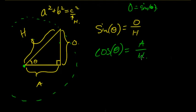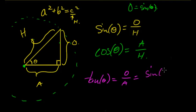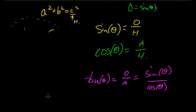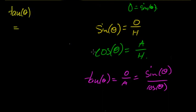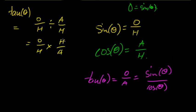Cos theta = adjacent over hypotenuse. Tan theta = opposite over adjacent, and can also be expressed as sine theta over cos theta. We can prove this: substituting, sine theta / cos theta = (opposite/hypotenuse) ÷ (adjacent/hypotenuse) = (opposite/hypotenuse) × (hypotenuse/adjacent). The hypotenuses cancel, leaving opposite over adjacent, which equals tan theta.